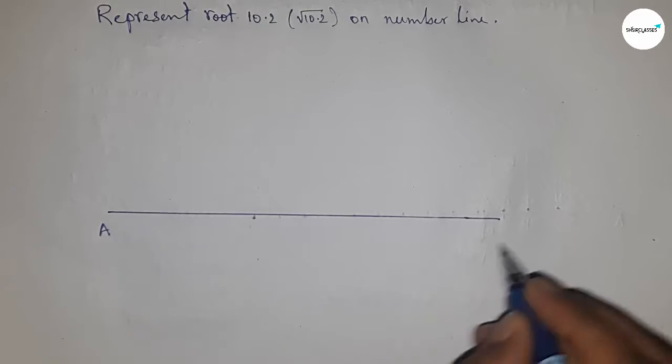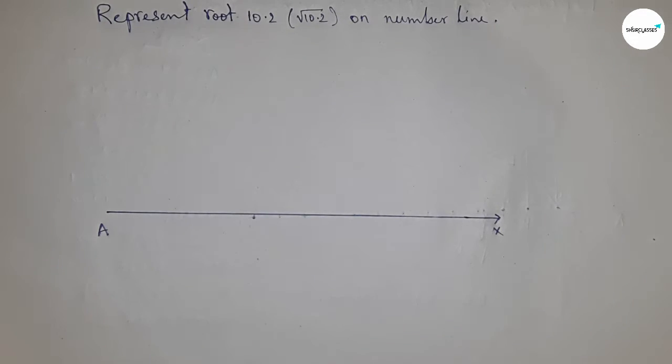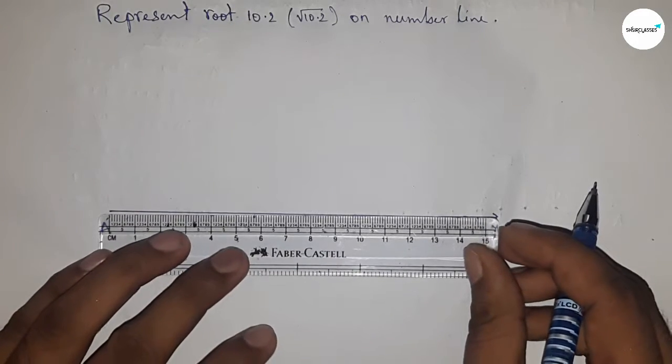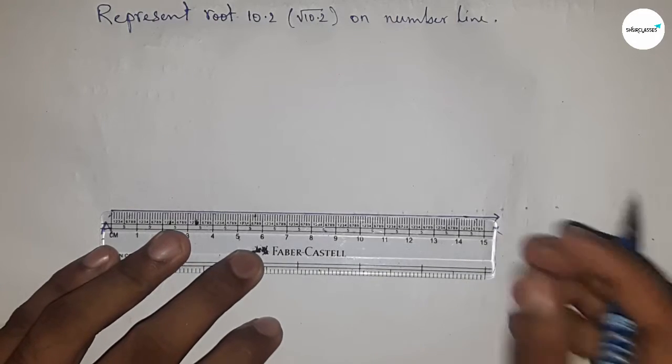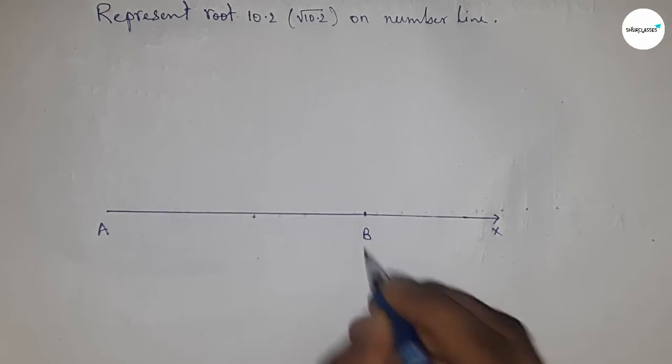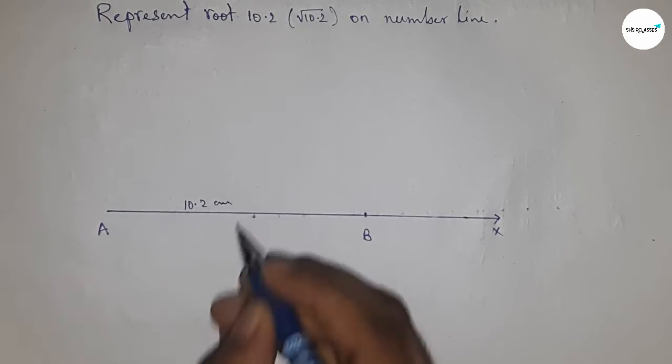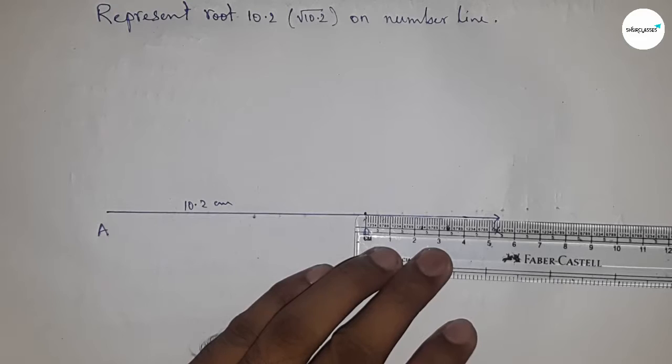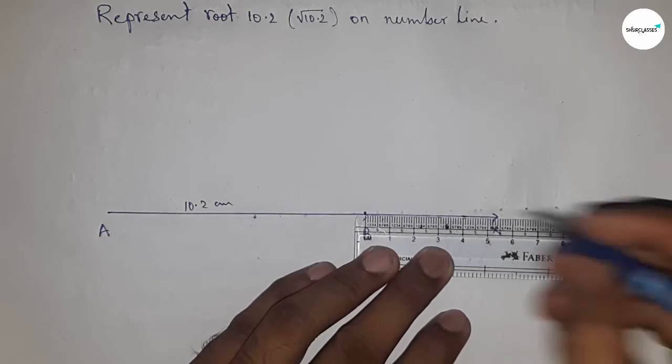First, draw a line of any length. This is the AX line. Next, take 10.2 centimeters using a scale, so AB equals 10.2 centimeters. Mark point B, then mark the numbers on the line from B to X using the scale.